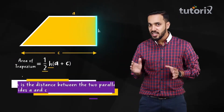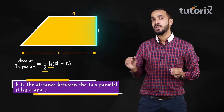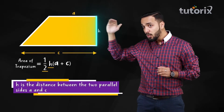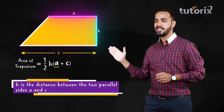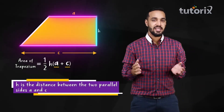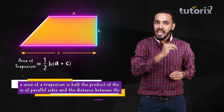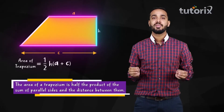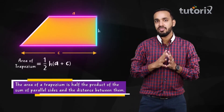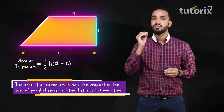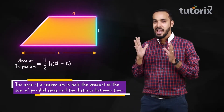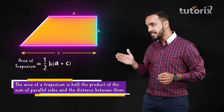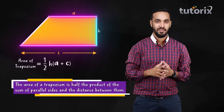We know that A + B is nothing but C. So, area of trapezium = half H × (A + C). Here, H is the distance between the two parallel sides A and C. So basically, the area of a trapezium is half the product of the sum of parallel sides and the distance between them. Wasn't that simple?